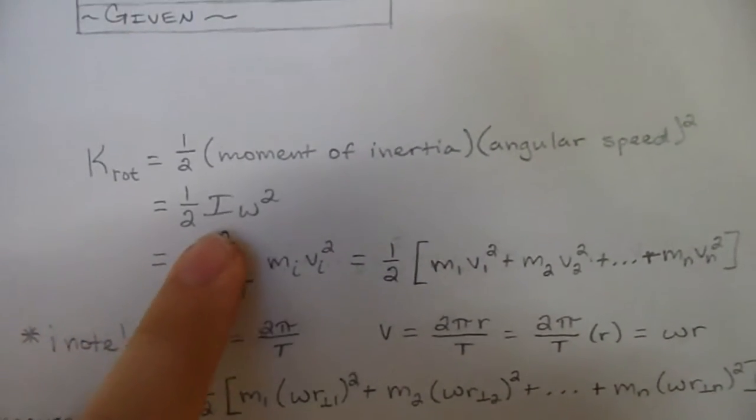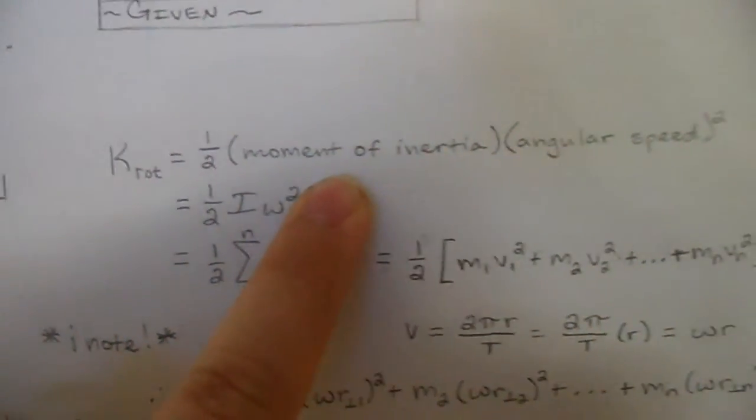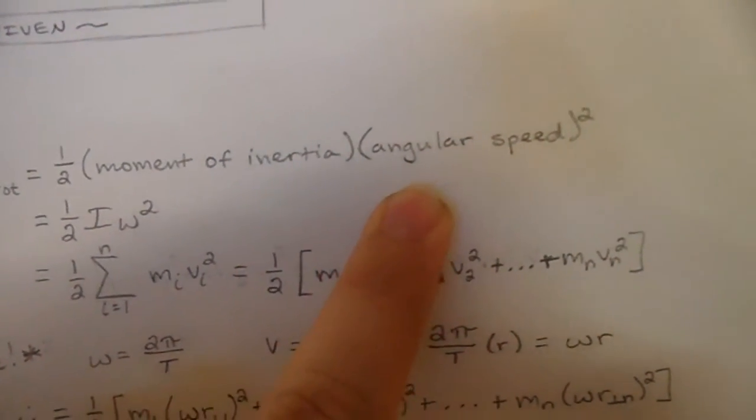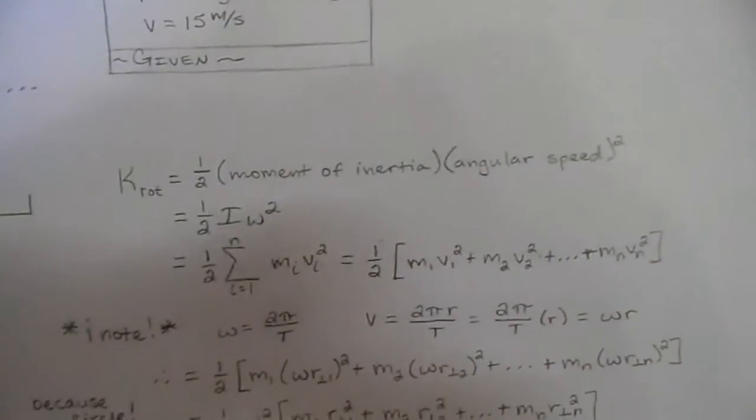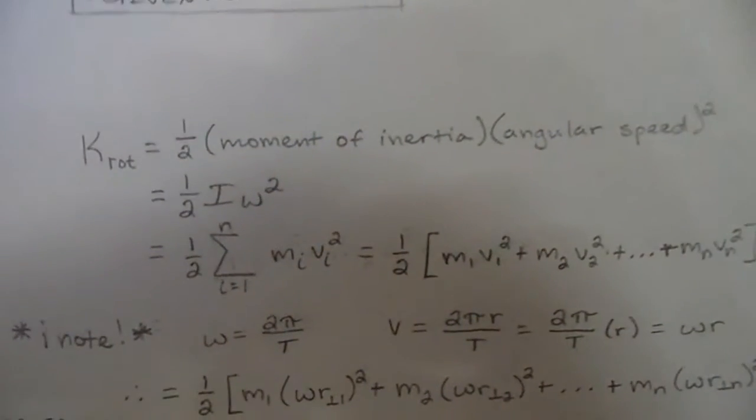So, jumping into rotational pretty quickly. Rotational is one half times the moment of inertia times the angular speed squared. This is very similar to what we just did for the translational energy.